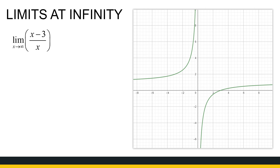Rational functions are what we're really interested in. Let's look at this one — we've got a sketch of x minus 3 over x. This function has a horizontal asymptote at y equal to 1. As x goes to positive infinity, the y values get very close to 1, and similarly, as x goes to negative infinity, the y values get closer and closer to 1. So we're expecting the limit to equal 1.